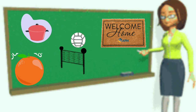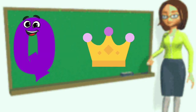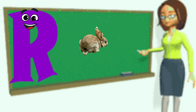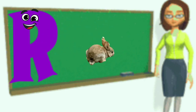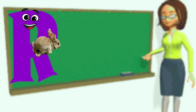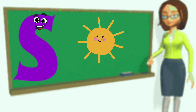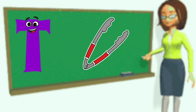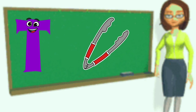Q is for Queen, Q-Q-Queen. R is for Rabbit, R-R-Rabbit. S is for Sun, S-S-Sun. T is for Toad, T-T-Toad.